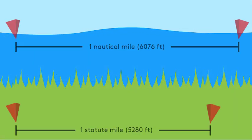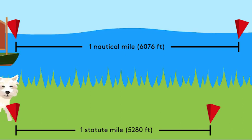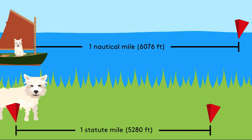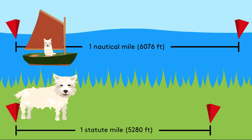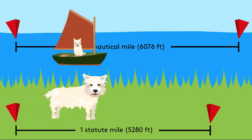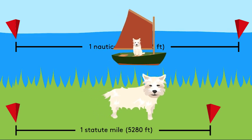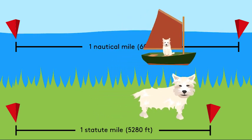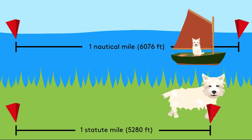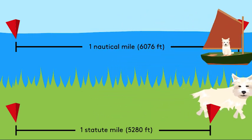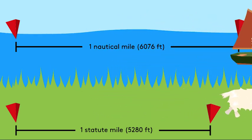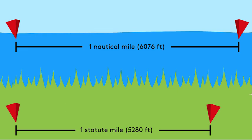Notice that Bella's speed in miles per hour is just a little bit faster than her speed in knots, because 1 statute mile on land is just a bit shorter than 1 nautical mile at sea.